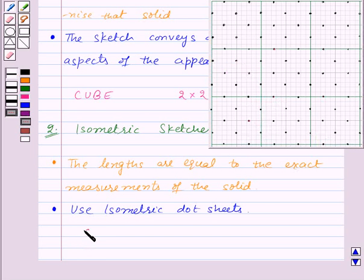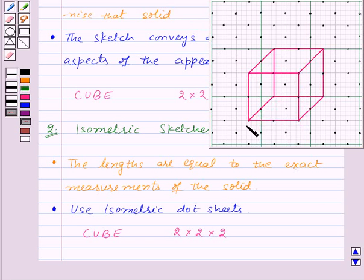So, let us draw an isometric sketch of a cube of measurements 2 units by 2 units by 2 units. First, we will draw the front face of the cube which will be a square of side 2 units. Now, we will draw four line segments which will be parallel to each other starting from the four corners of the square of length 2 units. Now we will join the corresponding corners to get the required cube. This is the required cube whose each side is of length 2 units.